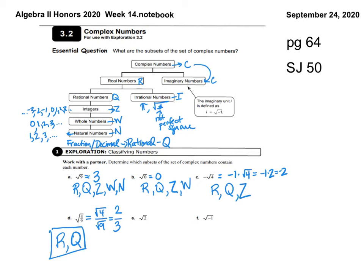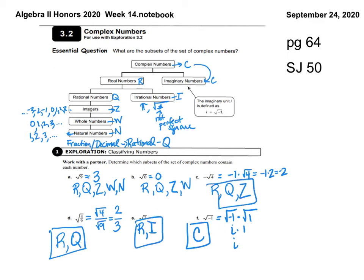Letter E: the square root of 2. Is that a real number? Yes. Is it rational or irrational? The square root of 2 does not come out as a whole number, so it's irrational (I). Letter F: the square root of negative 1. We break it apart: the square root of negative 1 times the square root of 1 is i times 1, which is just i. It's not real, so it's complex (C). Those are the answers to A through F.